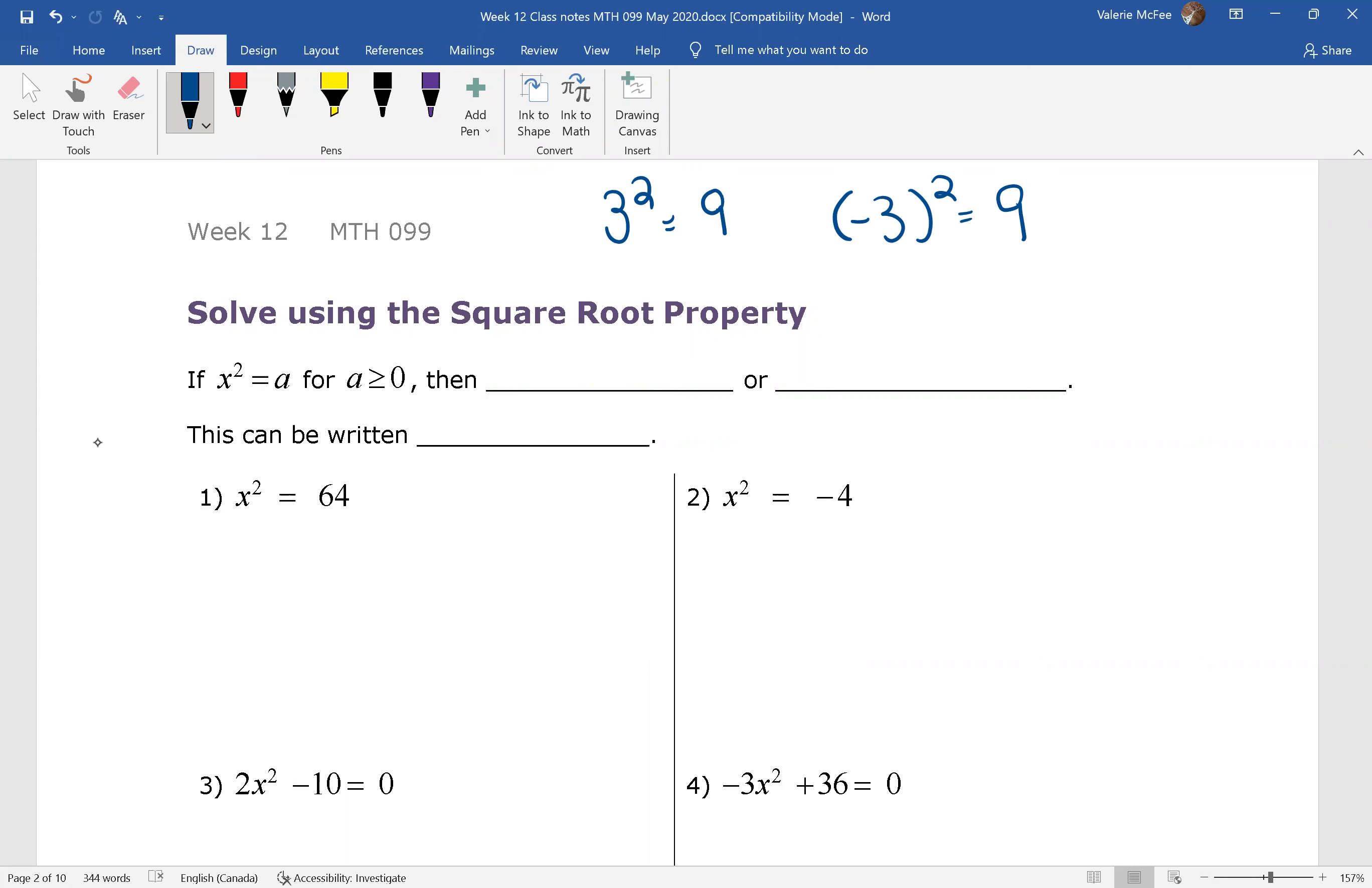We say if x squared equals a for a greater than or equal to 0, because remember if we square a number it's always positive, then x equals the square root of a or x equals the negative square root of a. This is really important.